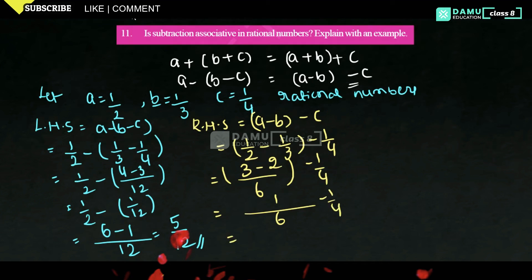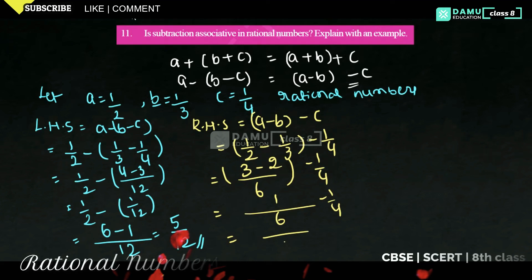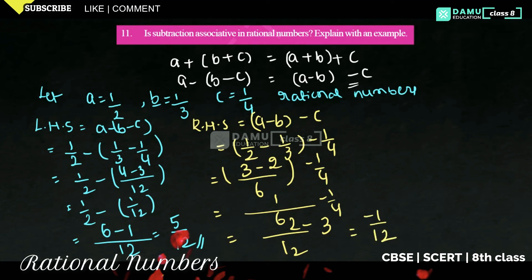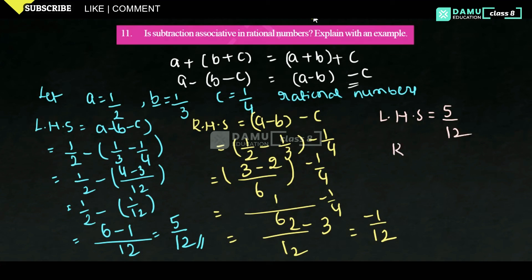So 1/6 minus 1/4. The LCM of 6 and 4 is 12. So 6 times 2 is 12, and 4 times 3 is 12. We get (2 minus 3) over 12, which is minus 1/12. So RHS equals minus 1/12. Therefore LHS equals 5/12 and RHS equals minus 1/12, so LHS is not equal to RHS.